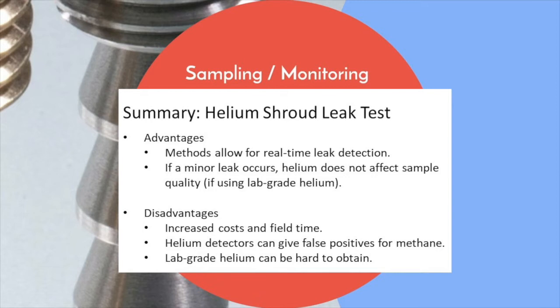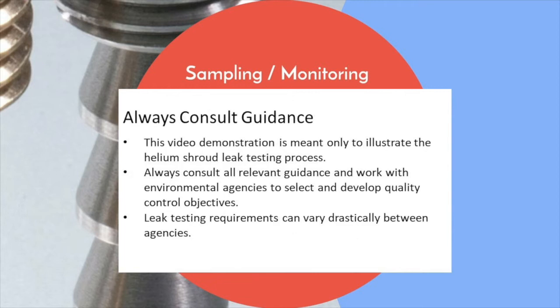However, helium leak testing also has a few disadvantages, including increased costs and logistics. It should also be noted that helium leak detectors can provide false positives in the presence of methane, which can undermine their use at petroleum or chlorinated VOC vapor intrusion sites, where methane may be present in the subsurface. Please note, this video demonstration is meant only to illustrate the helium shroud leak testing process. Always consult all relevant guidance and work with environmental agencies to select and develop quality control objectives. Leak testing requirements can vary drastically between agencies and locations.